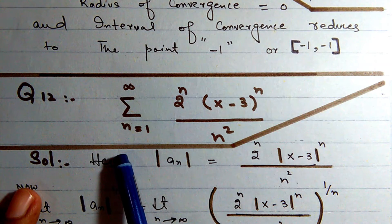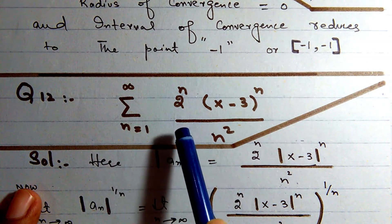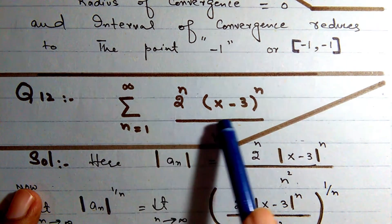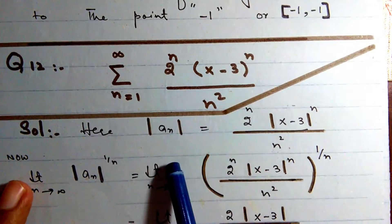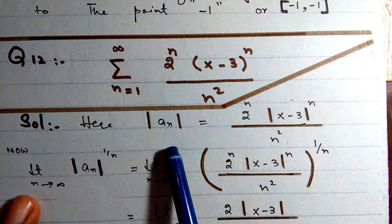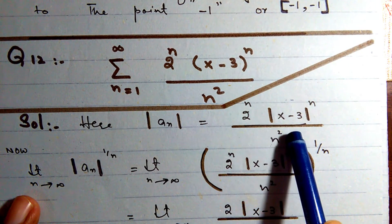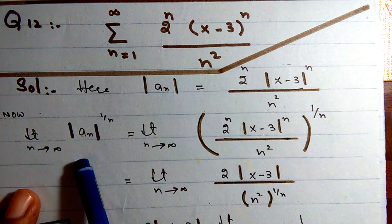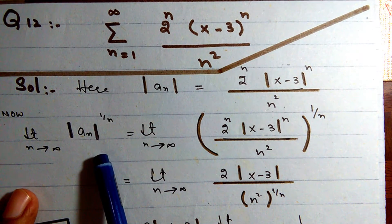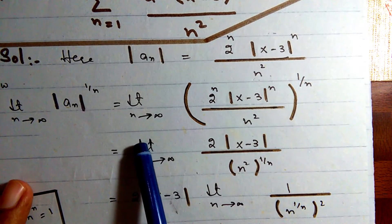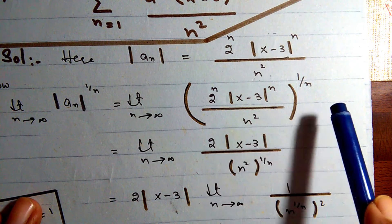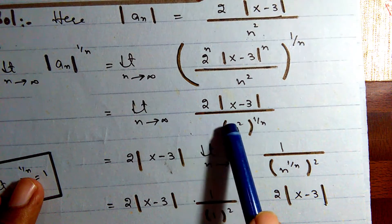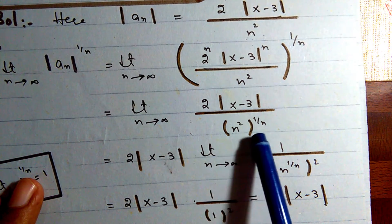Question 12: Summation from 1 to infinity of 2^n · (x-3)^n over n². Taking the absolute value |2^n · (x-3)^n / n²|, we apply the root test: limit as n→∞ of |a_n|^(1/n) = limit of 2·|x-3| / n^(2/n).